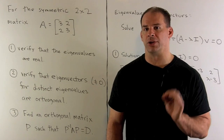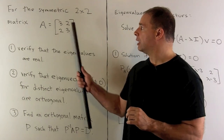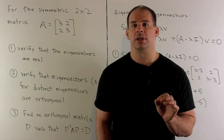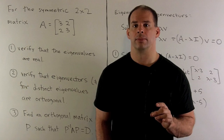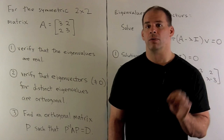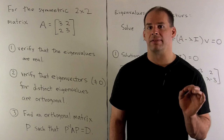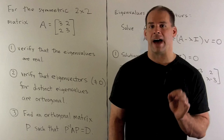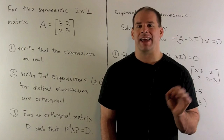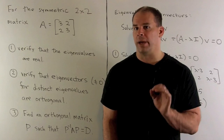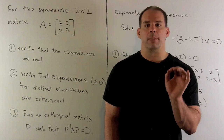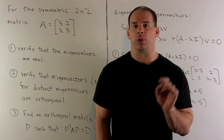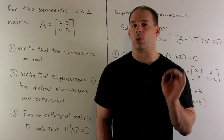For the following real symmetric two-by-two matrix A, we want to show three things. First, I want to verify that the eigenvalues of A are real. Then, for eigenvectors corresponding to the different eigenvalues, I want to show that they're orthogonal with respect to the usual inner product. Finally, I want to show that I can put A into diagonal form using an orthogonal matrix P. The theorem we're exhibiting here is: if we have a real symmetric matrix, we can always put it into diagonal form using an orthogonal matrix.